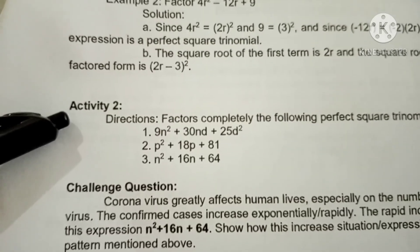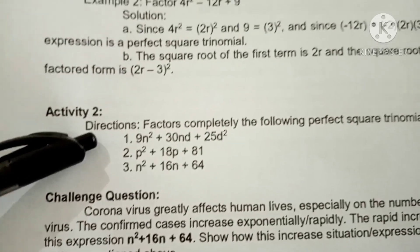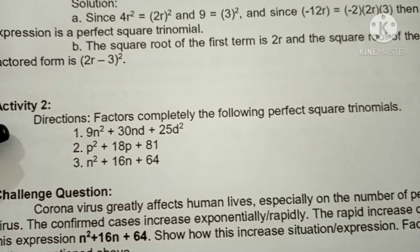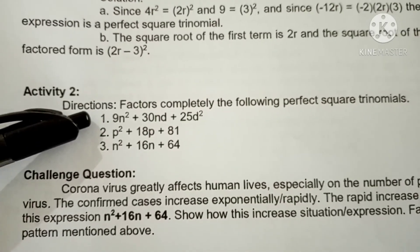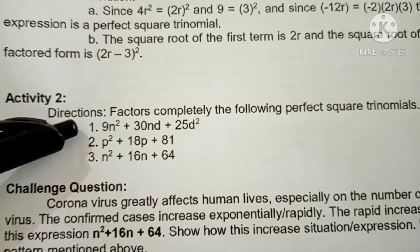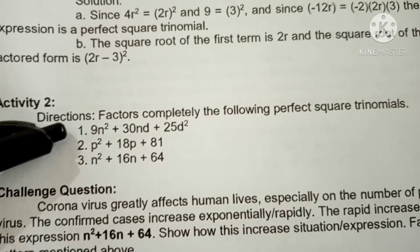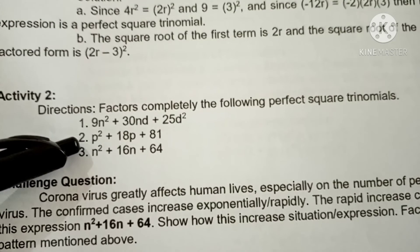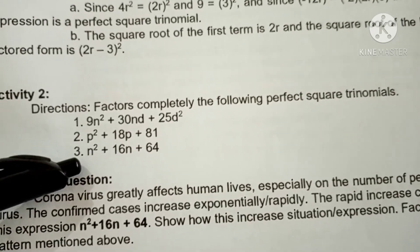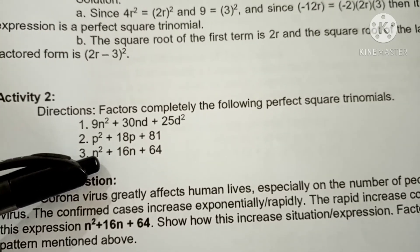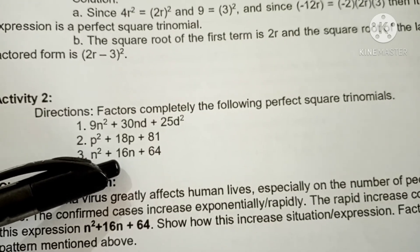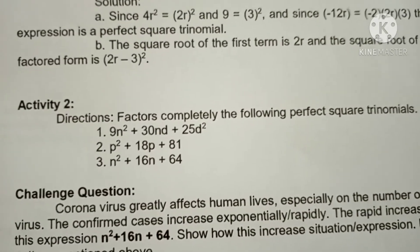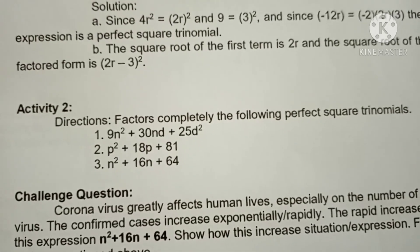Now answer Activity 2. Directions: factor completely the following perfect square trinomials. Number 1: 9n squared plus 30nd plus 25d squared. Number 2: p squared plus 18p plus 81. Number 3: n squared plus 16n plus 64. You may start answering. Thank you for listening, bye!